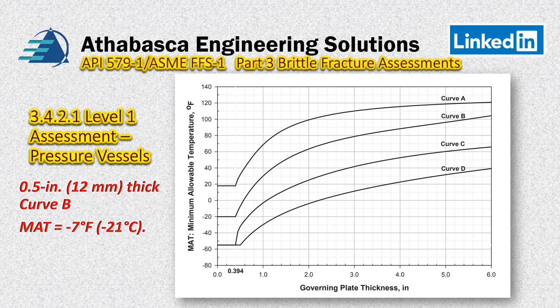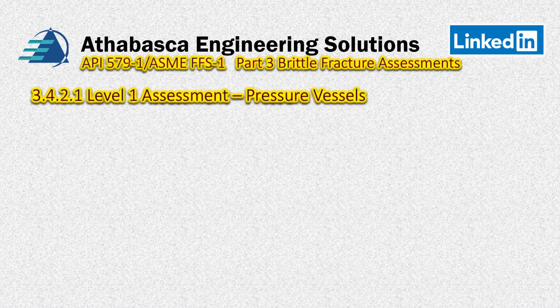From Figure 3.4, we take our governing thickness of half an inch, go up to Curve B, then read across and get our MAT of minus 7 degrees Fahrenheit. There are tables available in metric — they call it Figure 3.4M — and there is also a table format so you can put this into a spreadsheet and calculate it.